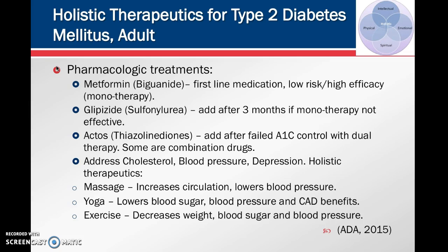Treatments for type 2 diabetes include pharmacological and holistic approaches. Metformin is the first-line medication — it is oral, low-risk, and high-efficacy. After three months, if A1C control is not achieved, a second-line drug such as glipizide can be added. If dual therapy still does not achieve desired A1C control, a third-line drug such as Actos can be added. Combination drugs, such as metformin combined with another agent, can also improve medication compliance.